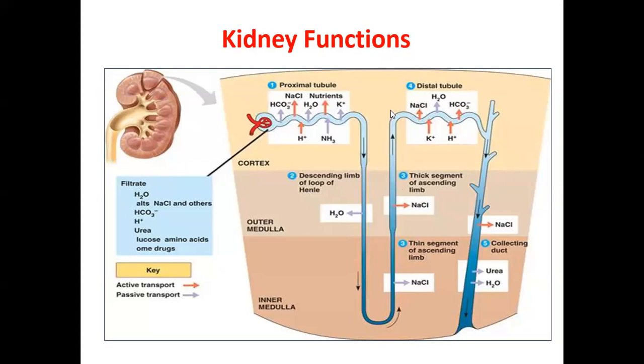After the loop of Henle, the next segment is the distal convoluted tubule, followed by the collecting tubule.